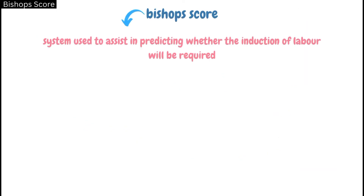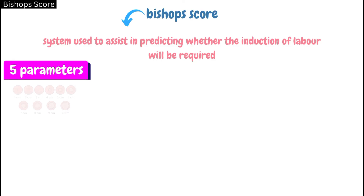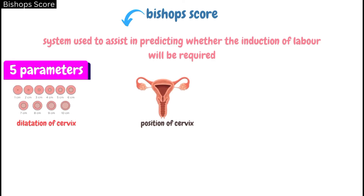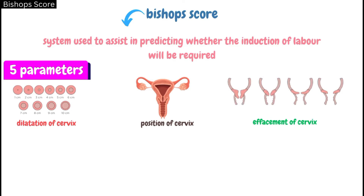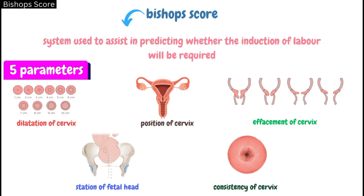Talking about the Bishop's score, it is a system used to assist in predicting whether the induction of labor will be required. Bishop's score is calculated by assessing five parameters including dilatation of the cervix, position of the cervix, effacement of the cervix, station of the fetal head, and consistency of the cervix.